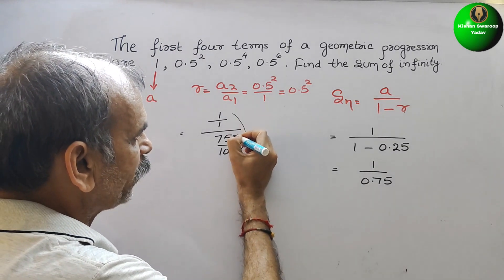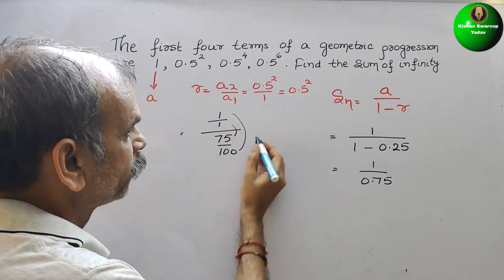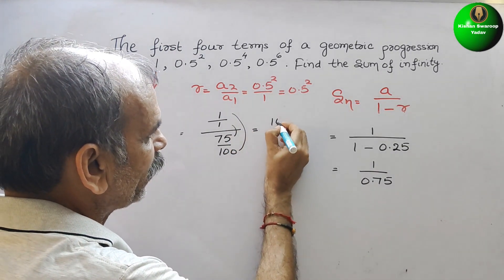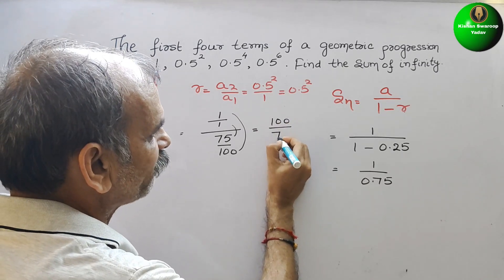Now, outer to outer, inner to inner. Here you will get 100 divided by 75.